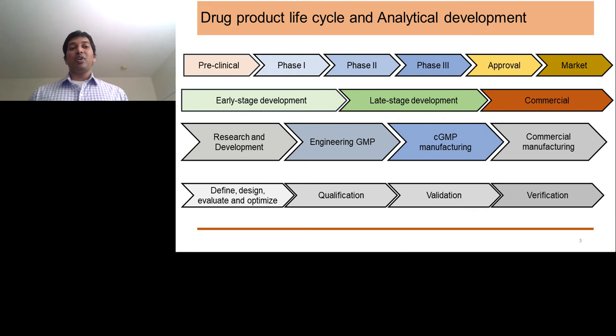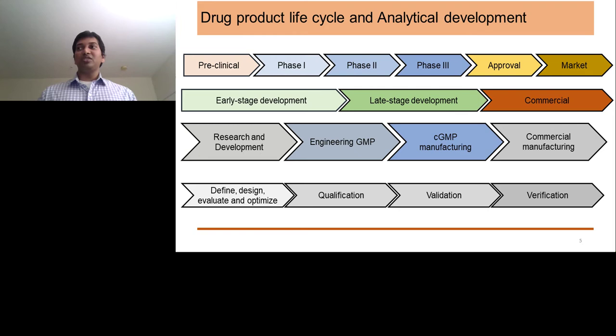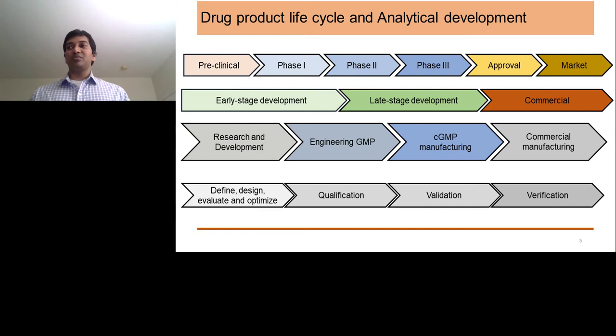Let's look at how analytical method development takes place according to these roles. During research and development, a specific biologic can have its own assay — it has to be defined, designed, evaluated, and optimized. This really means understanding the biologic and defining the critical parameters, and optimizing the assay during the R&D process. Once you have an assay with variable parameters that shows some kind of specificity to your biologic, you move into qualification.